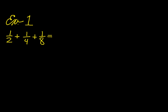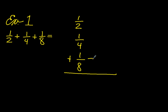The first thing you want to do is to write your fraction vertically. And then the next thing we're going to want to do is come up with a common denominator for all three fractions. In this case, the common denominator is eight.